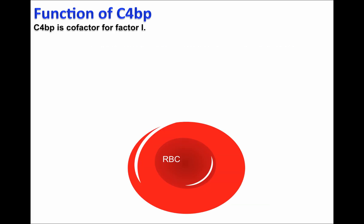In certain circumstances, the complement system is activated on the cell surface of host cells, represented here by the deposition of C4B on the cell surface of red blood cells.